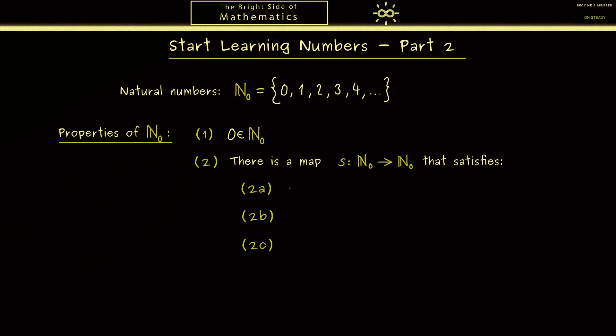First of all, the map s is injective. In other words, different natural numbers have different successors. This gives us the visualization that the natural numbers lie ordered on a straight line. If s wouldn't be injective, we could have loops in this picture.